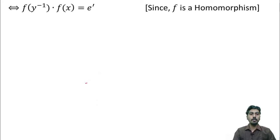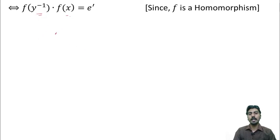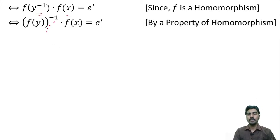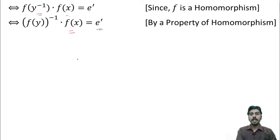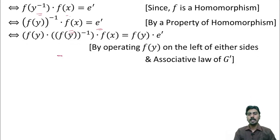Now, since f is a homomorphism, f of y inverse x can be written as f of y inverse into f of x. But by a property of homomorphism, f of y inverse can also be written as f of y whole inverse. So, we have f of y whole inverse into f of x is equal to e dash. Now, I operate f of y on both sides. I get f of y into f of y whole inverse into f of x is equal to f of y into e dash.